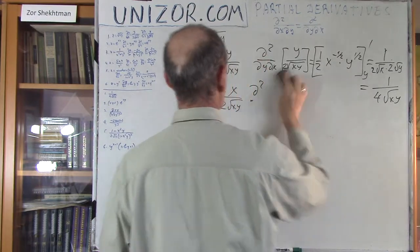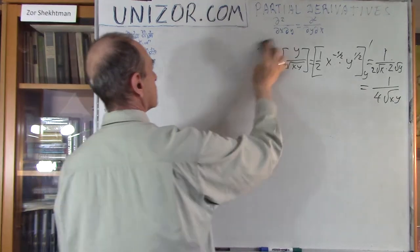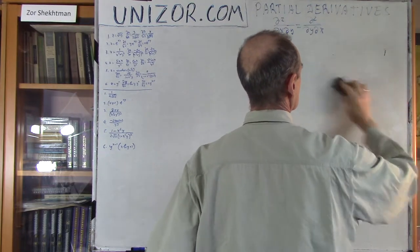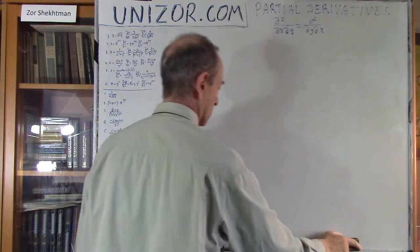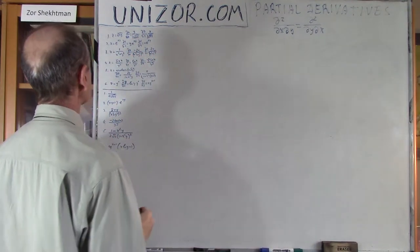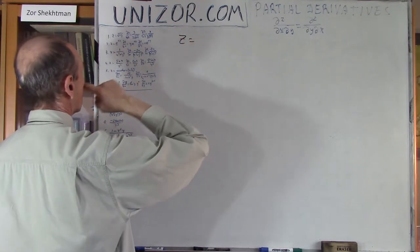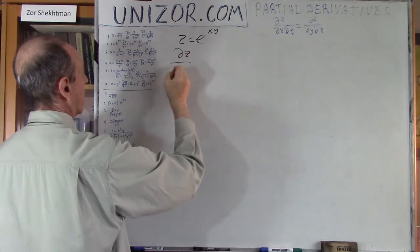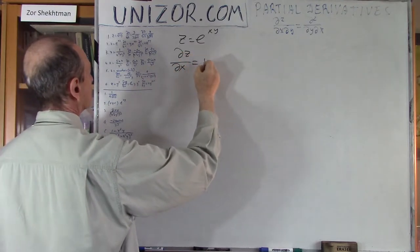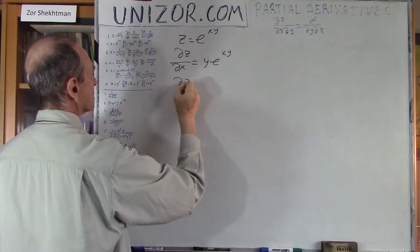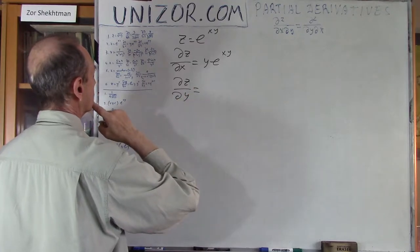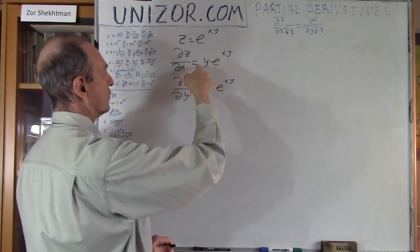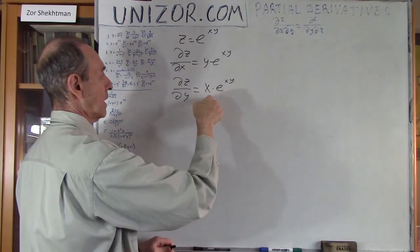Next example. This is both an illustration that mixed derivatives are the same, and also just another practice in differentiating — straightforward but requiring accuracy. My function is e to the power xy. My first derivative by x is equal to y times e to the power xy. My first derivative by y is equal to x times e to the power xy. I would like to differentiate the first by y and the second by x and compare the results.